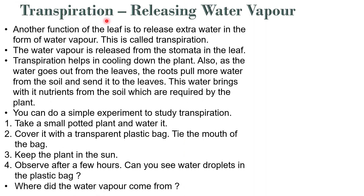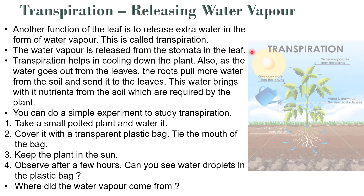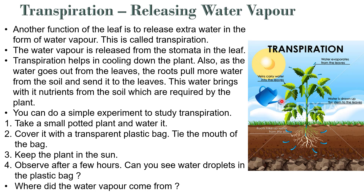Now we will discuss transpiration — the releasing of water vapour. Another function of the leaf is to release extra water in the form of water vapour; this is called transpiration. The water vapour is released from the stomata in the leaf. When the plant has extra water, it is released through the stomata as water vapour. Transpiration helps in cooling down the plant. As water goes out from the leaves, the roots pull more water from the soil and send it to the leaves, bringing nutrients from the soil which are required by the plant.